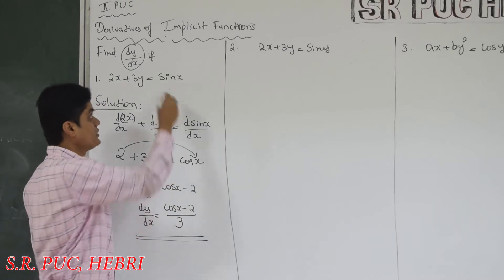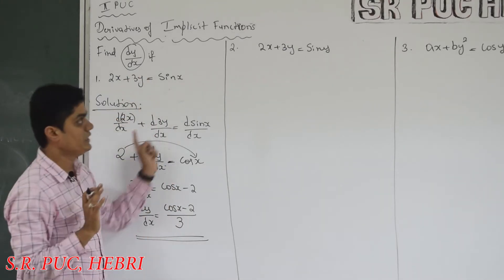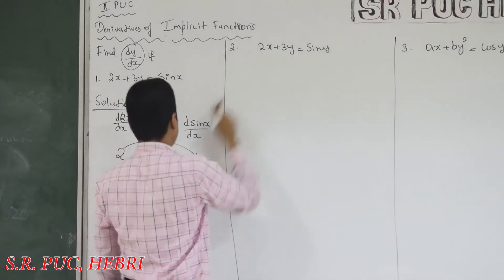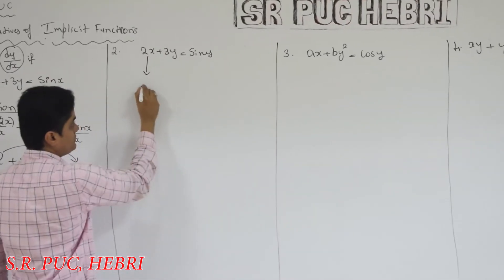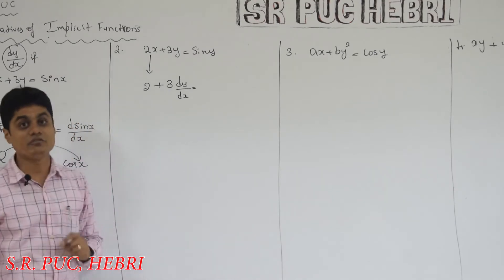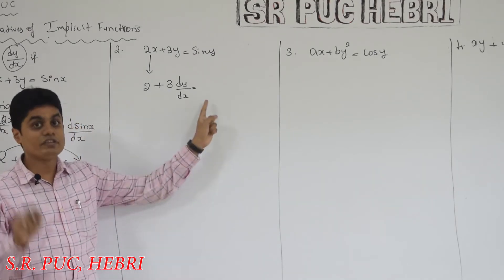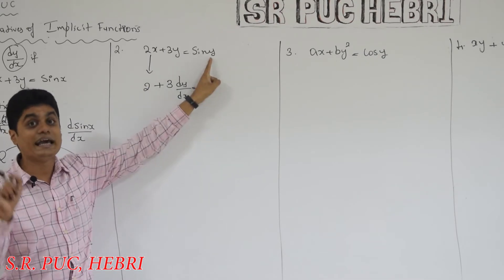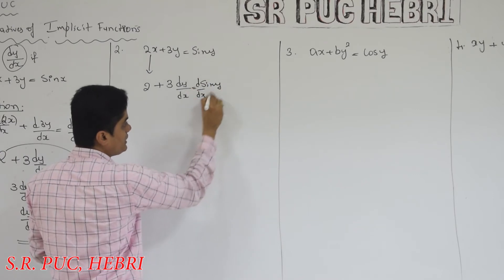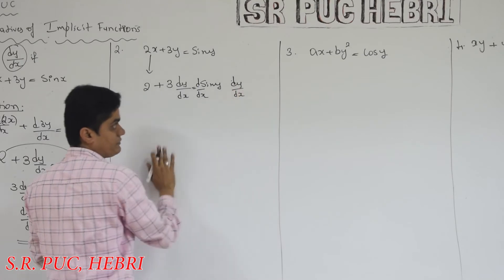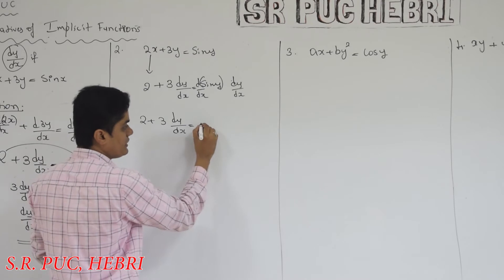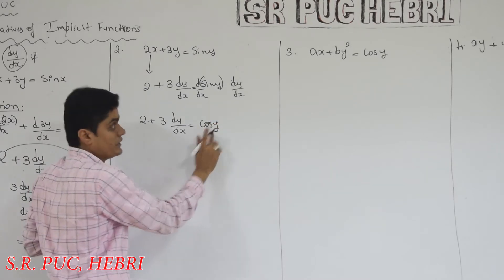Normal differentiation only, but whenever you differentiate a term that contains y, be careful. Next question: almost the same, but the difference is sin y instead of sin x. Derivative of 2x is 2, derivative of 3y is 3(dy/dx). Now, what is the derivative of sin y with respect to x — not with respect to y? It is cos y multiplied by dy/dx, giving 2 + 3(dy/dx) = cos y · (dy/dx).